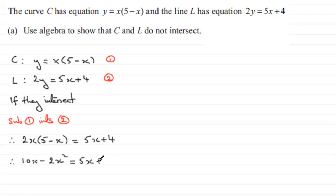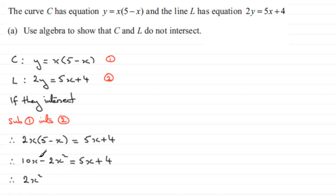I can see that I've got a quadratic equation here because I've got an x squared term. What I want to do is make this term positive and make it equal to 0, so I'm going to add 2x squared to both sides and subtract 10x from both sides. That gives me 2x squared, then 5x take away 10x which is minus 5x, plus 4, equals 0.